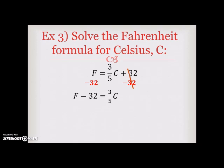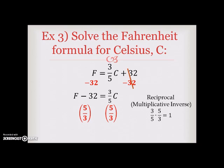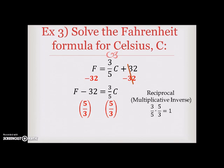In this case you cannot combine F and 32 because they are not like terms. Next, in order to get C by itself, you want to divide both sides by 3 fifths. However, instead of dividing both sides by 3 fifths, we are going to instead multiply by the reciprocal. A reciprocal or multiplicative inverse is simply your fraction flipped. So 3 fifths reciprocal is 5 thirds. And here we are left with 5 thirds times the quantity of F minus 32 is equal to C.